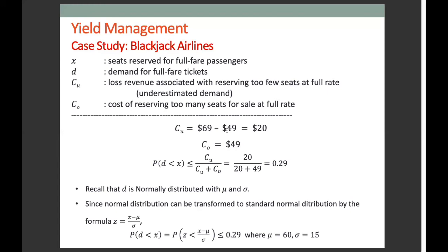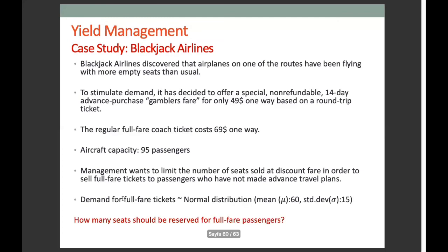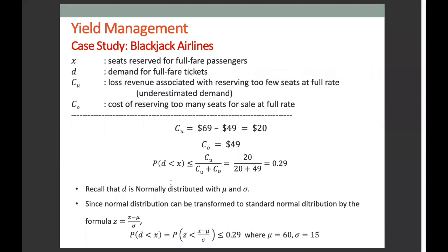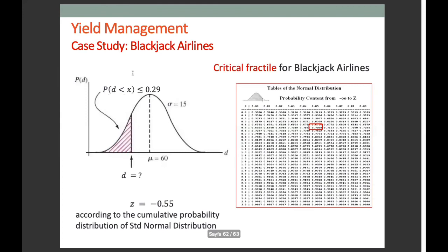If we reserve more seats than demanded, we cannot sell the excess seats, so the overage cost is $49. Using the critical fractile approach, the right-hand side of the critical fractile is calculated as 0.29. We know that demand for full-fare tickets is normally distributed with mean 60 and standard deviation 15, so we transform to the standard normal distribution to calculate the value of X.